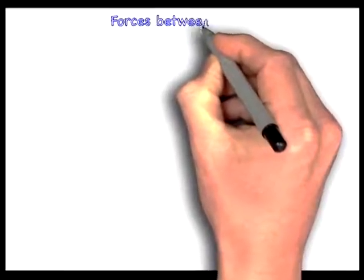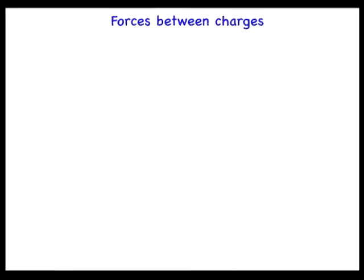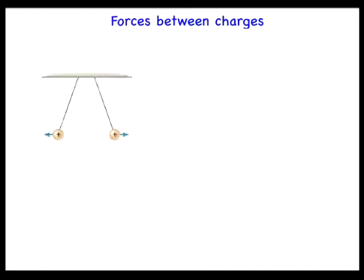It is easy to demonstrate that two electrically charged objects exert a force on one another. When two small balls that have been positively charged and are light and free to move, they repel each other. On the other hand, when one ball carries a positive charge and the other a negative charge, they attract one another.